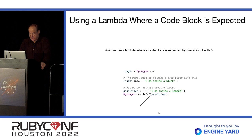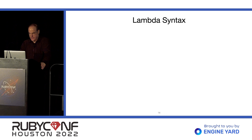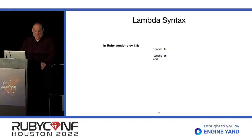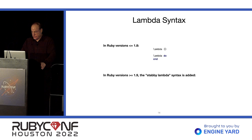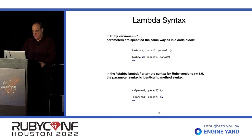If you want to use a Lambda where a code block is expected, you just precede it with an ampersand. If you want to use a method where a Lambda is expected, you can do that too. In Ruby versions before 1.9, the proc keyword was the only way to specify a Lambda — it's really the same as a code block. Starting in 1.9, we had the stabby Lambda notation added. For parameters, the old notation is the same as with code blocks, and with the stabby Lambda it's the same notation as method calls.